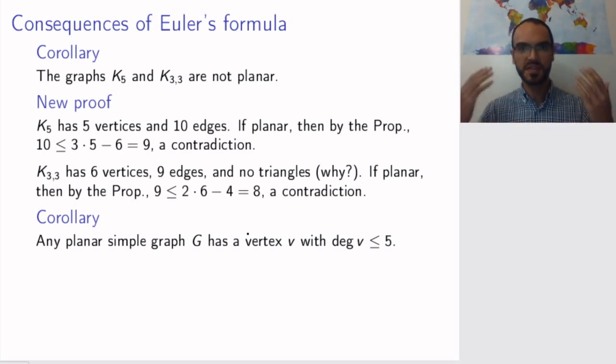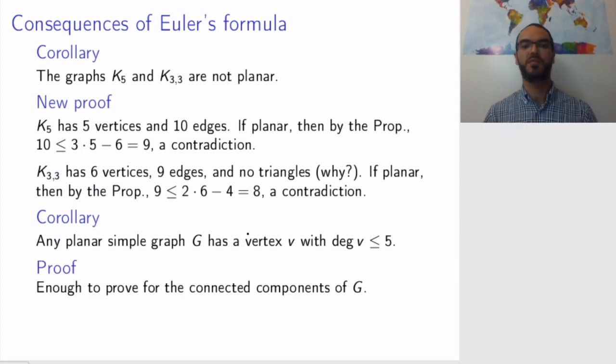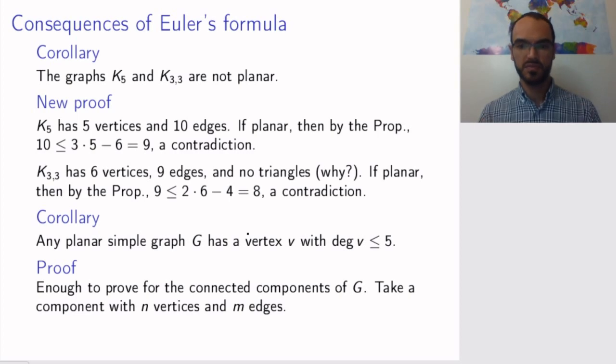This is not a proof, this is just an intuition to understand why this is a reasonable statement. Now to see why it's a true statement, let's look at the proof. So if the graph is not connected, we look at each connected component, because this statement doesn't change if we look at a specific component or the whole graph. So we're looking at a connected graph, and we need to show that if it's planar, then it will have a vertex with low degree. So let's assume that the number of vertices is n, and the number of edges is m, as usual.